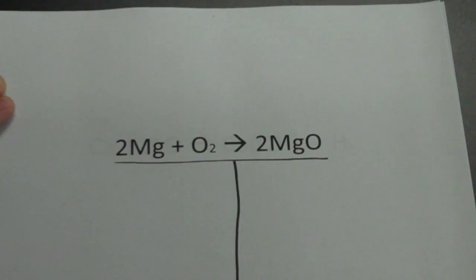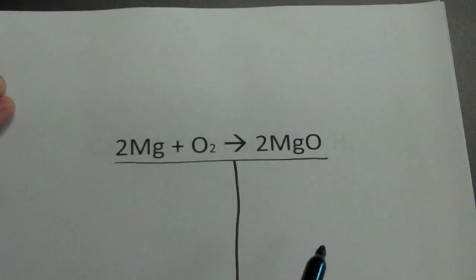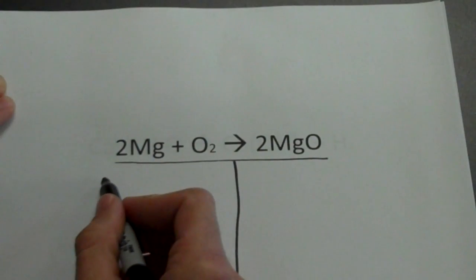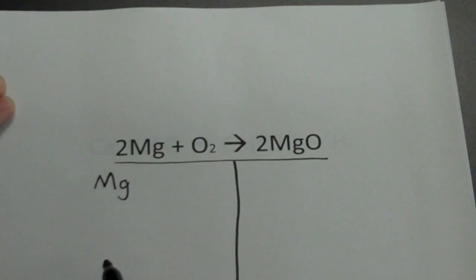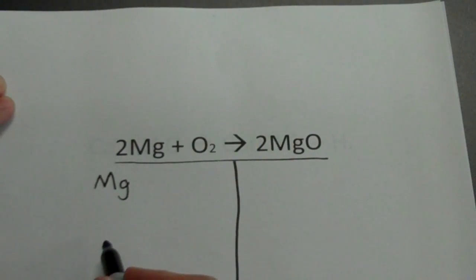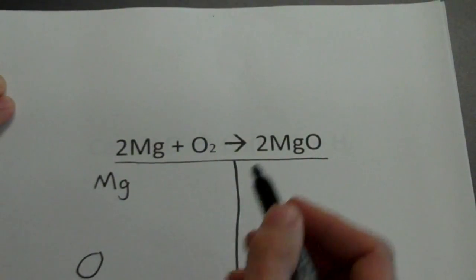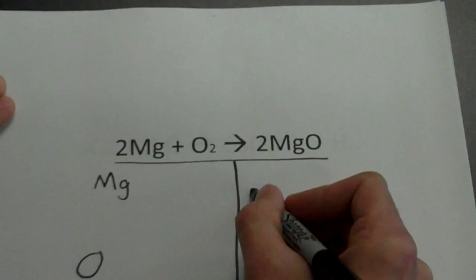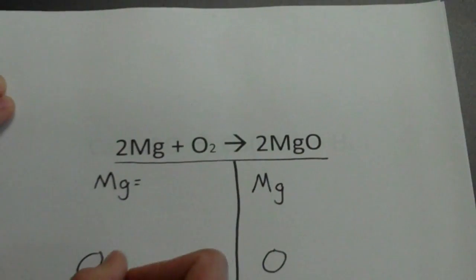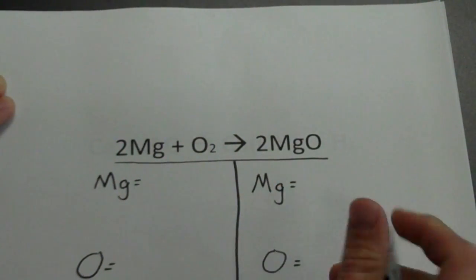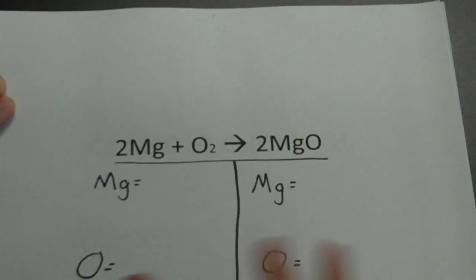The next step — let's go ahead and figure out what elements are in this equation. I see that we have magnesium, so I'm going to put magnesium over here. Give yourself a lot of room, take your time, and you'll be nice and neat and it'll be a lot easier. We have magnesium here and we have oxygen. Over here also we have magnesium and we have oxygen. I'm going to make a little equal sign. Don't hesitate to write all over this thing if you need to.